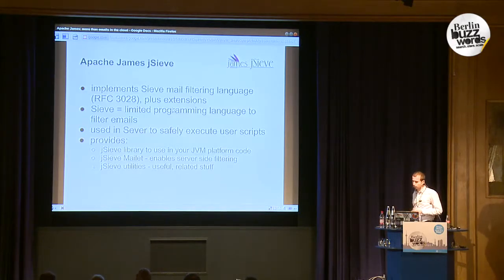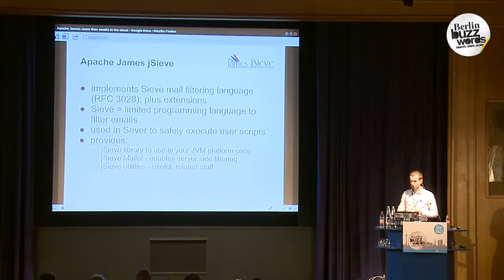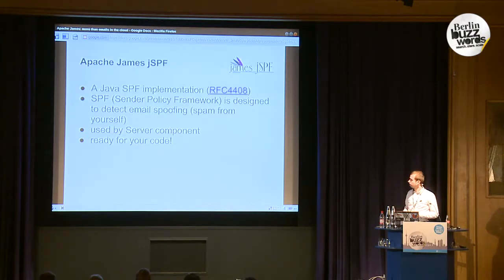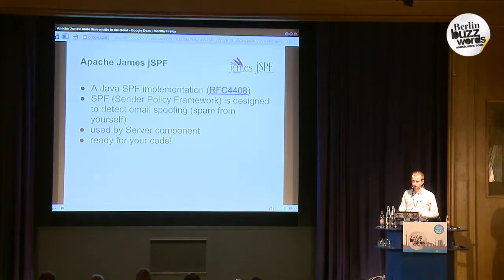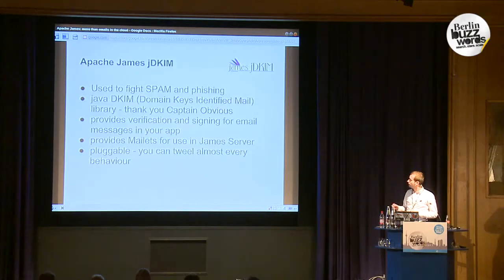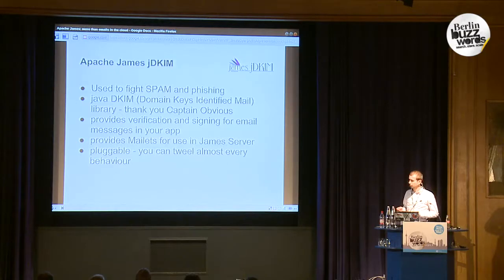Another component is JSieve — it's basically an implementation of the Sieve filtering language. If you need simple filtering rules in your application, you can use JSieve to implement Sieve. JSPP is a library for implementing the Sender Policy Framework, helping avoid spam. JDKIM is used to fight spam and phishing using DomainKeys Identified Mail, and you can use it as a library in your code.